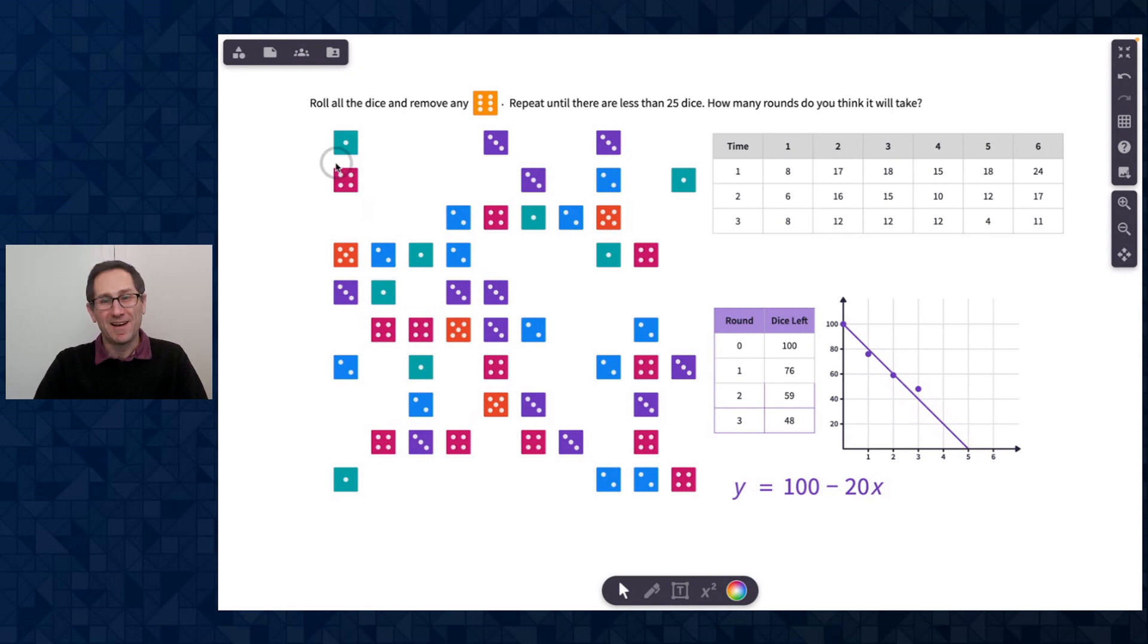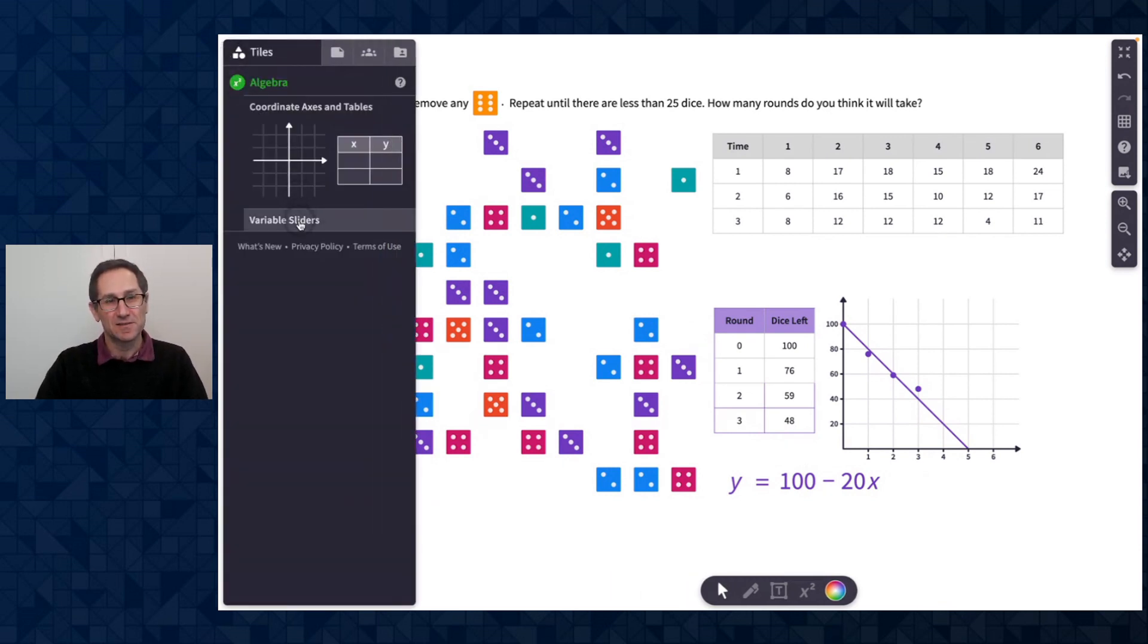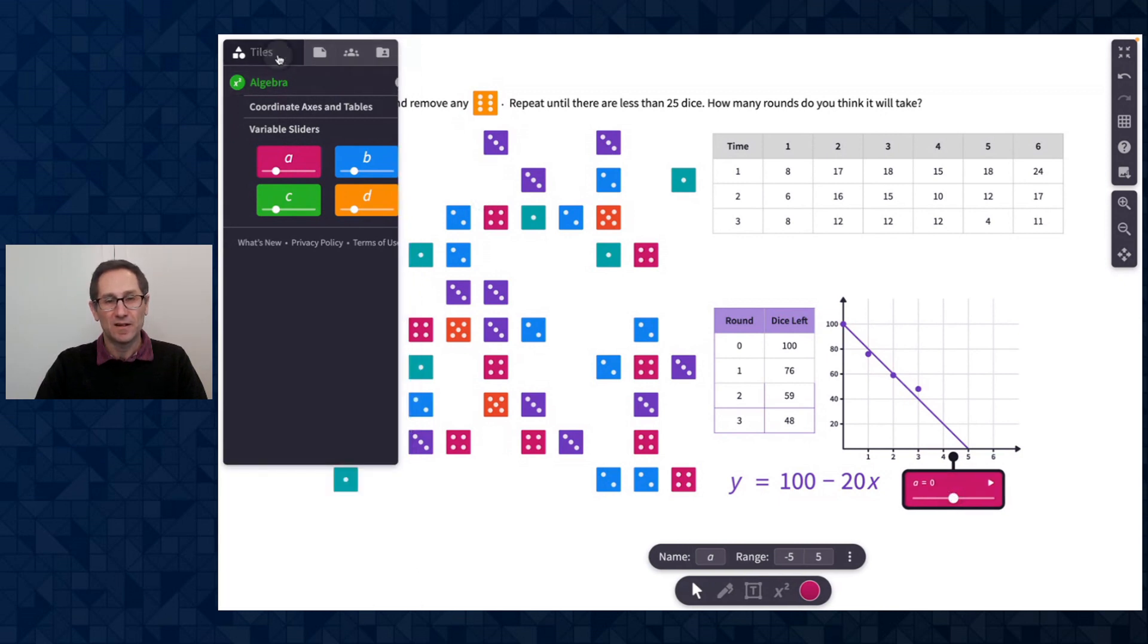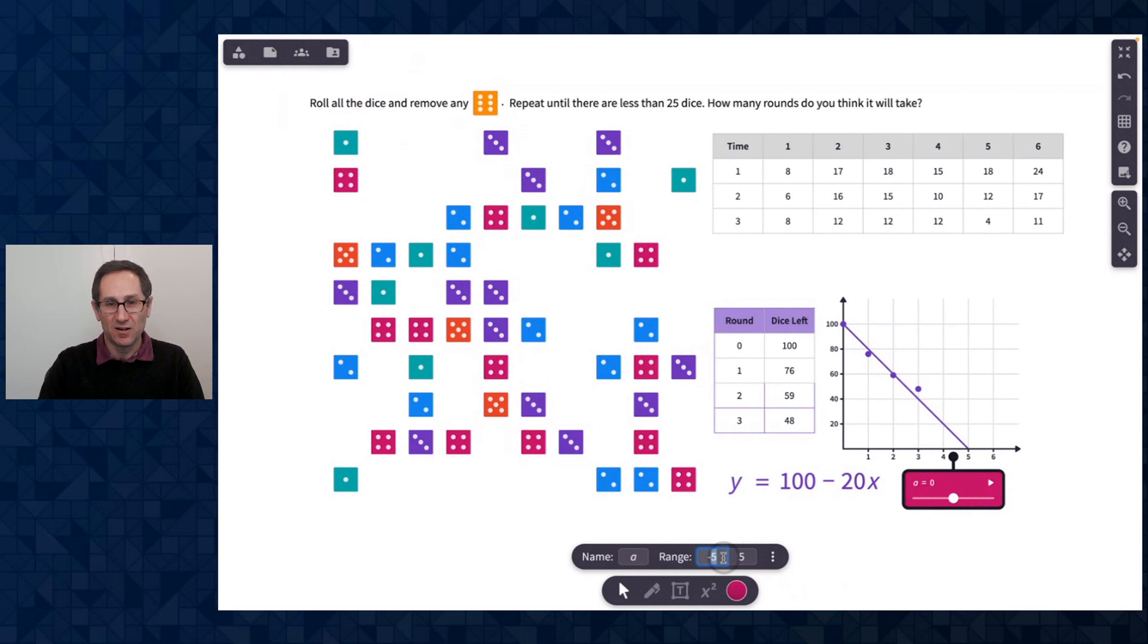So maybe I want to adjust this 20. I just want to show you how I can do that with a slider on Polypad. So I'm going to go to the sidebar menu and click on tiles. You can see all I have available on this Polypad are the coordinate axes and tables and the variable sliders. So I'm going to add a slider to the canvas, a slider of A here. And now let me close that. And I want to set this slider as a range from zero to 30. So now I can move this slider. There isn't anything happening in my graph yet because this is 20. I want to make this A. I'm going to do shift eight to do the dot for multiplication.